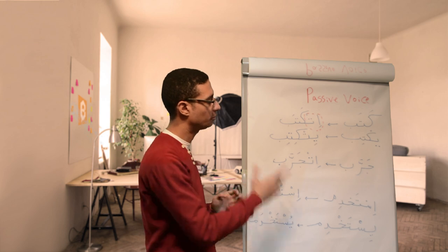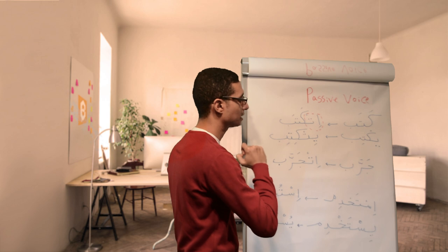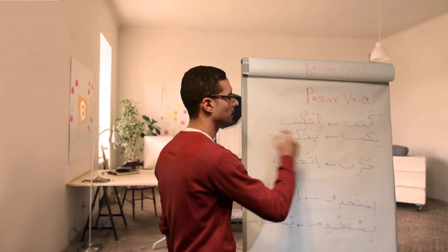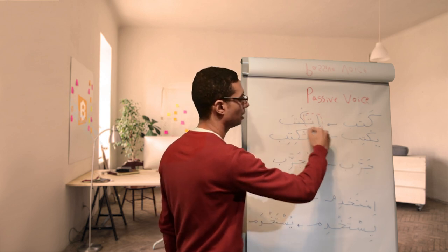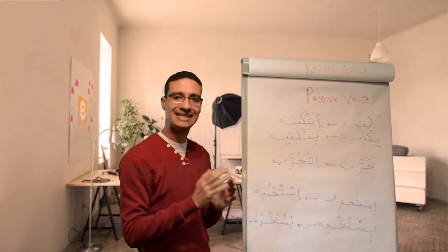Okay, in the present tense, for example, yiktib, he writes, it's yit-katab. So instead of it in the past, to be yit-katab. And the feminine is tit-katab.